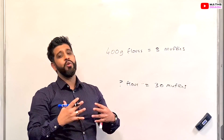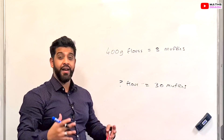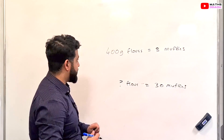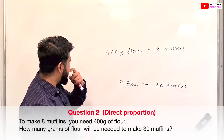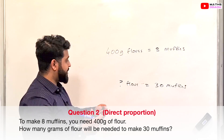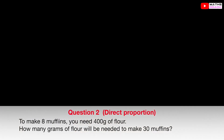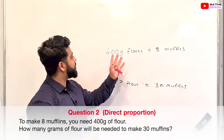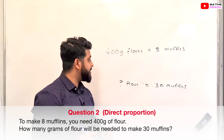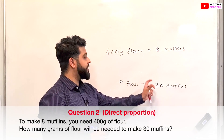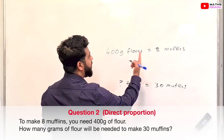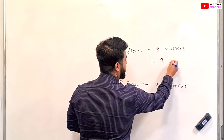We'll do one more direct proportion example and then move on to indirect proportion questions. Press pause and have a go yourself: 400 grams of flour is required to make 8 muffins. How many grams of flour would you need to make 13 muffins? Let's get straight into it — we want to know what is required for one muffin.